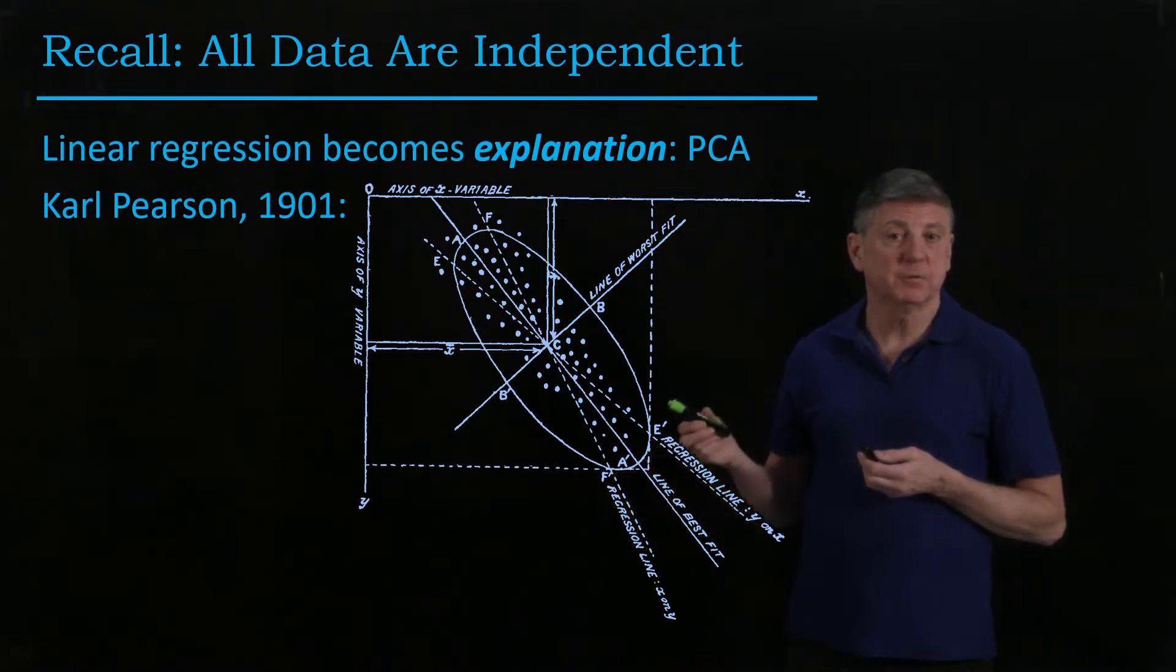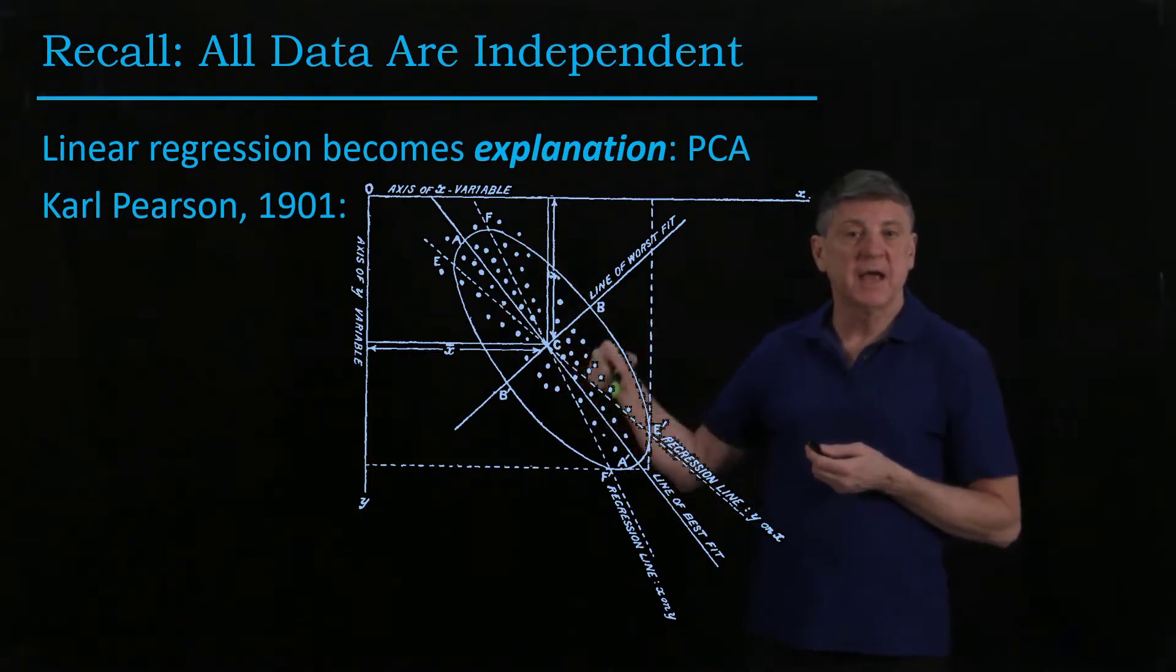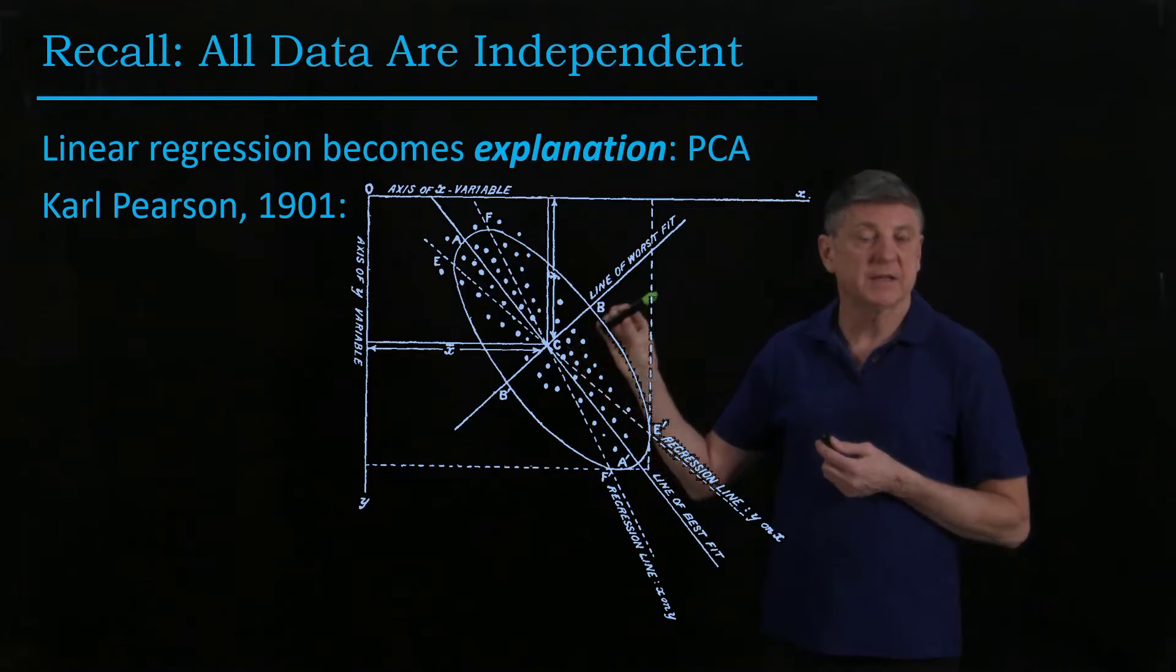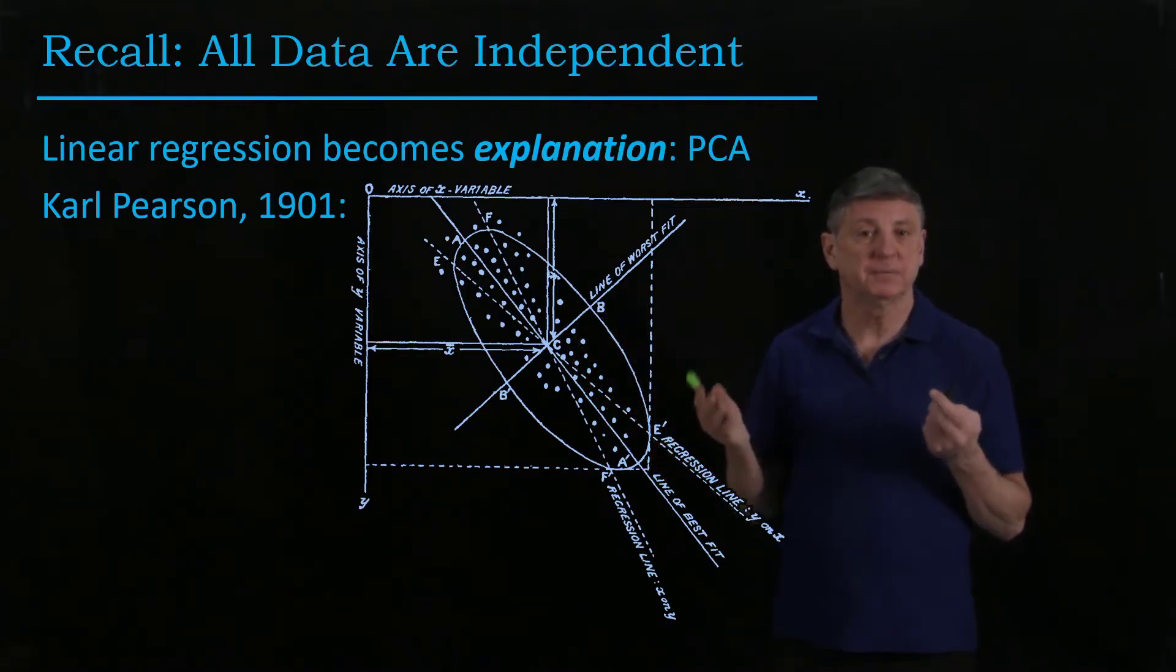we'll get two different regression lines. And that PCA is effectively giving us this middle line, and here he's drawing an ellipse. This ellipse has a major axis that is the first principal component we find from PCA, and the minor axis is the second component that we find from PCA for these data.